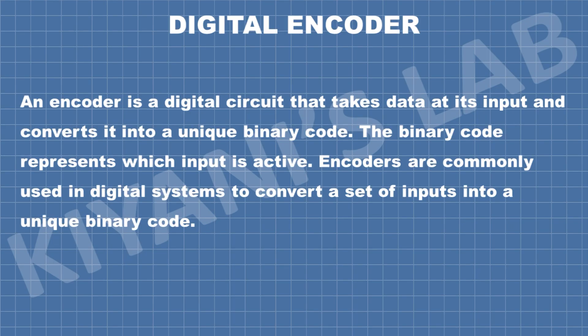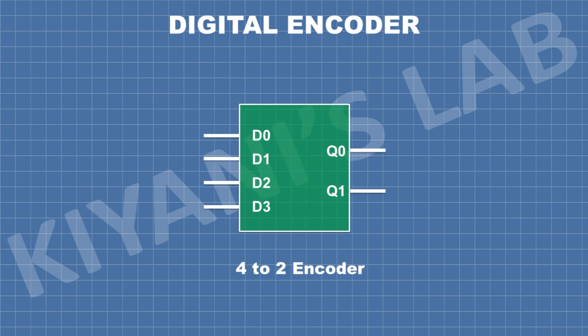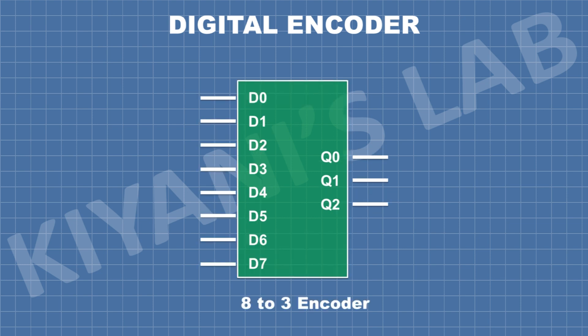An encoder is a digital circuit that takes data at its input and converts it into a unique binary code. The binary code represents which input is active. Encoders are commonly used in digital systems to convert a set of inputs into a unique binary code. This is a 4-to-2 encoder — it has four inputs and two outputs. And this is an 8-to-3 encoder — it has eight inputs and three outputs.